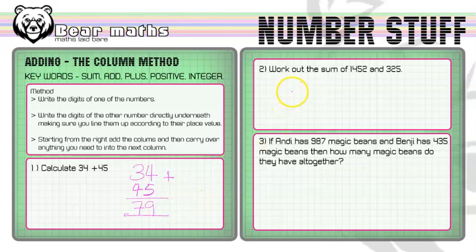The second question asks us to work out the sum of 1452 and 325. That means we need to add the numbers together. I know this because the word sum means the result of adding numbers together.